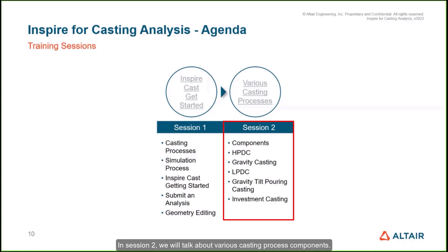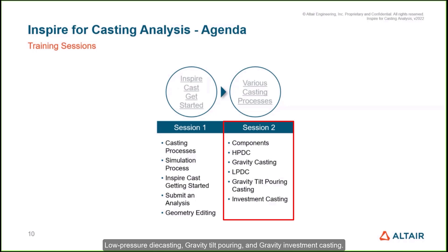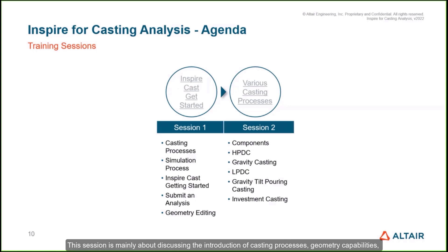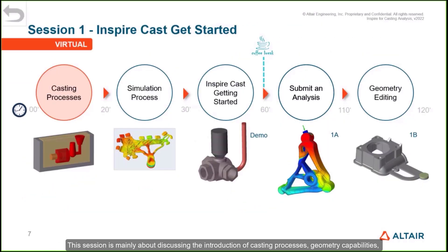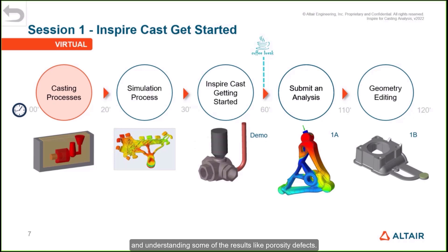In Session 2, we will talk about various casting process components, including high-pressure die casting, gravity casting, low-pressure die casting, gravity tilt pouring, and gravity investment casting. Session 1 focuses on discussing the introduction of casting processes, geometry capabilities, running a quick simulation, analyzing results, understanding the behavior of the flow, and understanding some results like porosity defects.